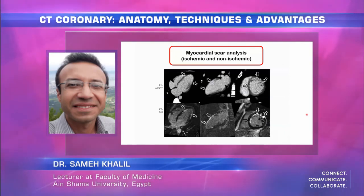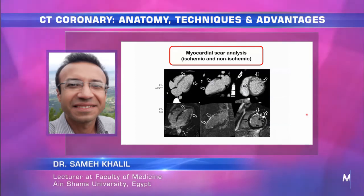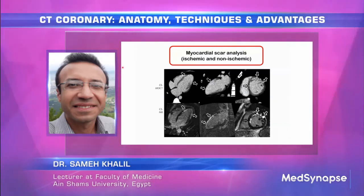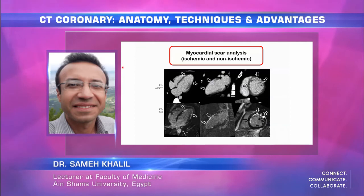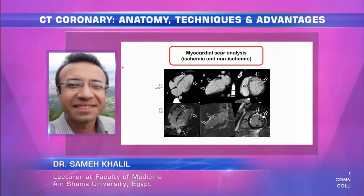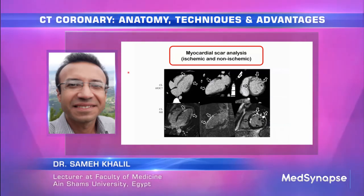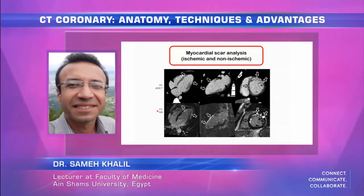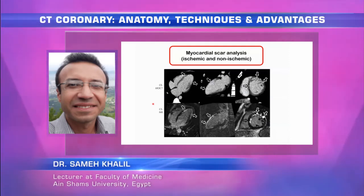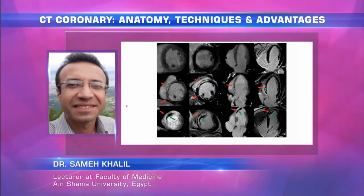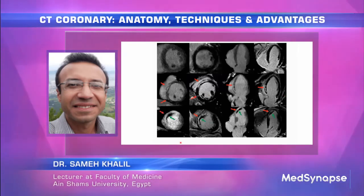For patients who cannot be exposed to magnetic fields — such as those with cochlear implants or MRI-incompatible pacemakers — viability assessment can be performed using contrast-enhanced CT. We inject contrast, wait 5–10 minutes, then acquire delayed images from the myocardium, providing information similar to MRI — less accurate, but still informative.